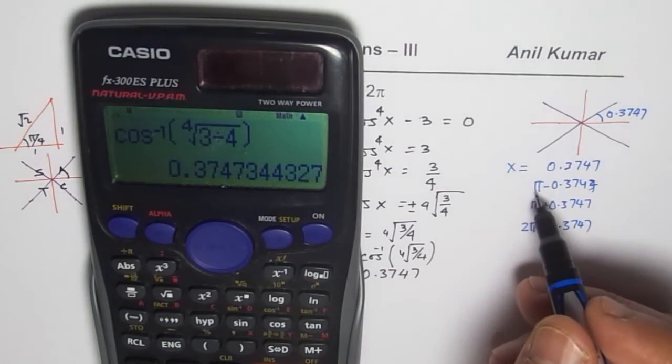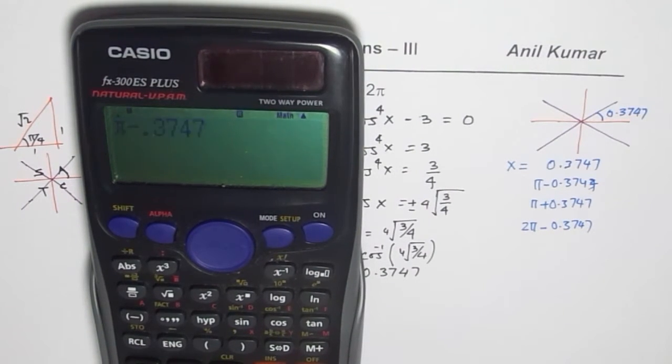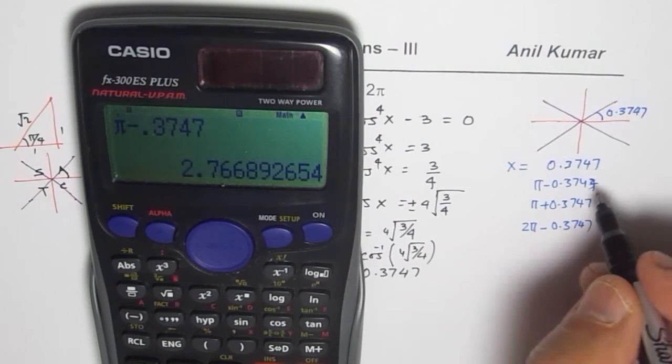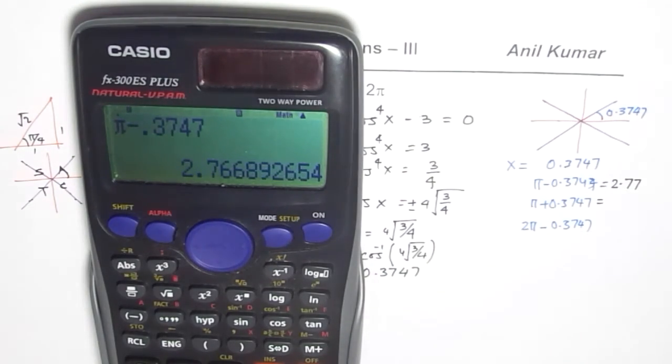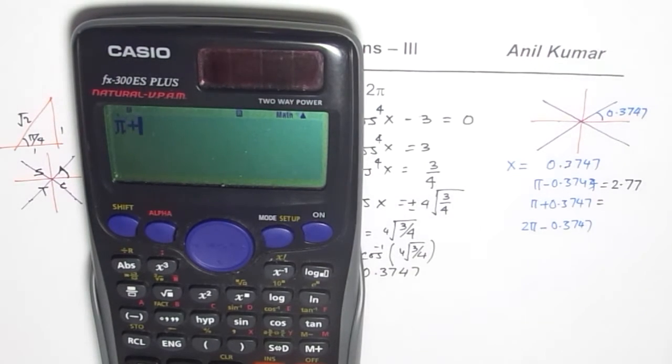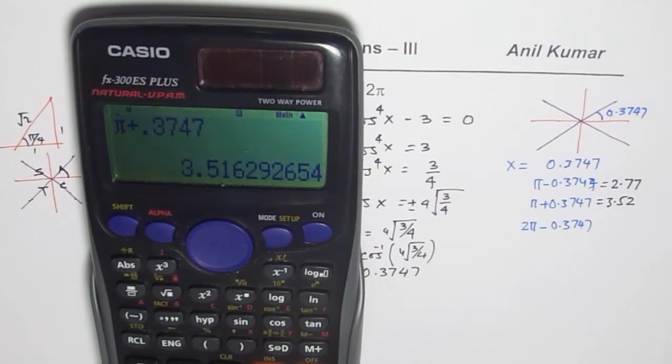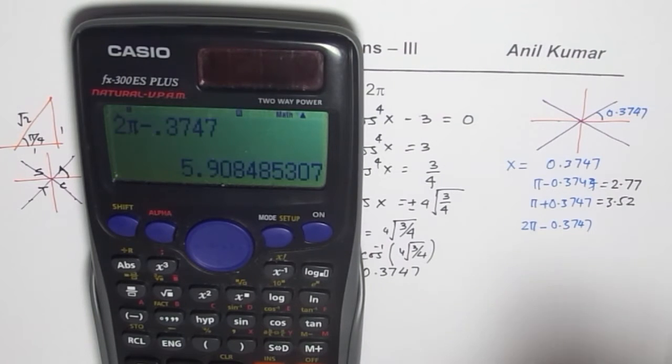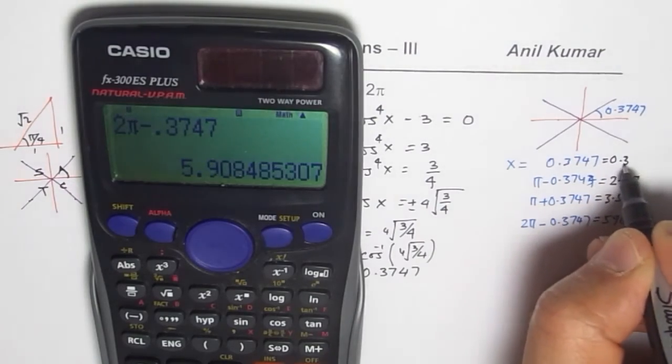We can also use π as 3.14. So it is π - 0.3747 = 2.77, I am rounding them to 2 decimal places in radians. And then we have π + 0.3747 = 3.52. And then we have 2π - 0.3747 = 5.9.